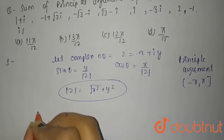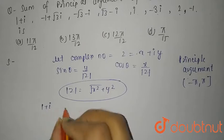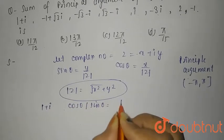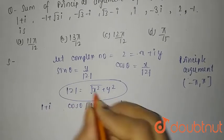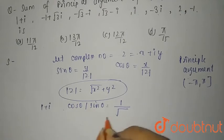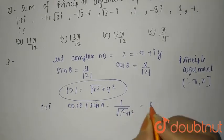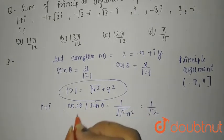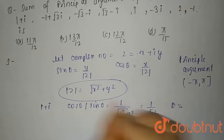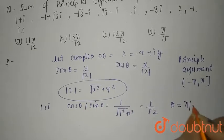Applying this to the first complex number, 1 + i: cos θ and sin θ are both equal to 1/√(1² + 1²) = 1/√2. So θ = cos⁻¹(π/4) or sin⁻¹(π/4), which gives θ = π/4.